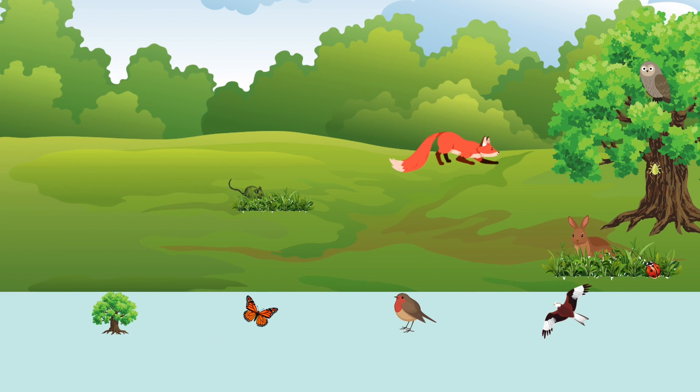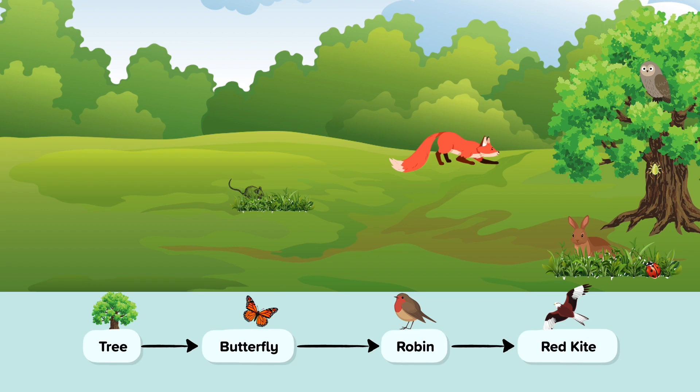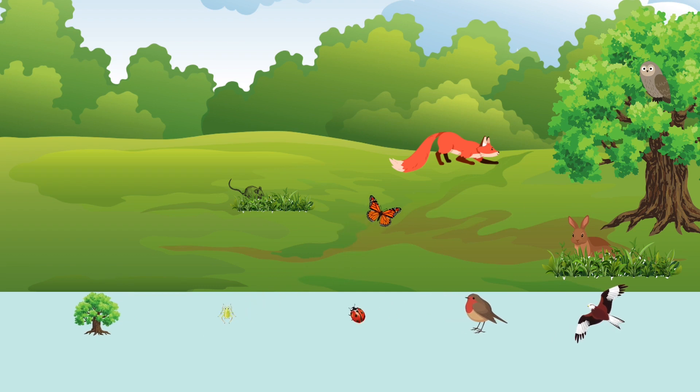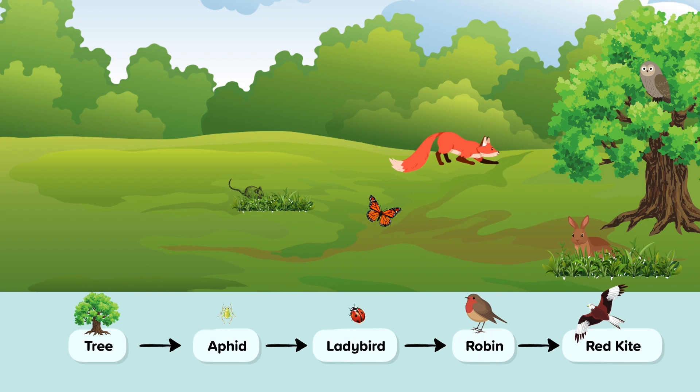Within an ecosystem, there are many food chains. Here is another example. The tree produces food, again through photosynthesis. The energy gets passed through the food chain to the butterfly, the robin, and the red kite, as each organism is eaten by the next. Here is another example of a food chain, where the tree produces energy, which is passed to the aphid, and onwards to the ladybird, robin, and red kite. As you can see, there are many feeding relationships, even in a simplistic representation of an ecosystem.